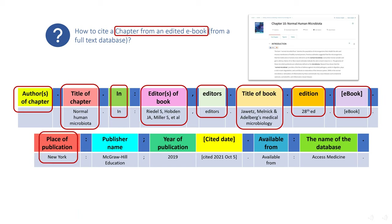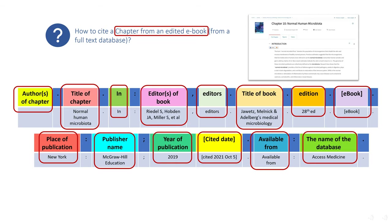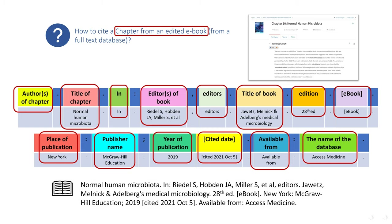Put square bracket [ebook] as this book is an electronic book. Next, provide the place of publication, colon, publisher name, semicolon, and year of publication, then insert the date the information was referred to in square brackets, full stop. Finally, provide the name of the database where the e-book was retrieved from — in this example, Access Medicine, full stop.